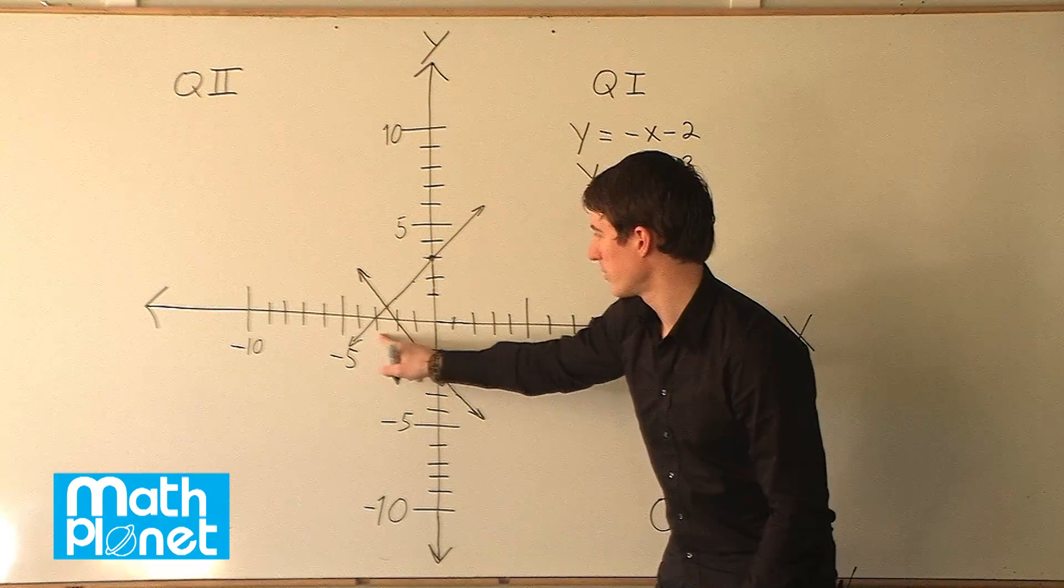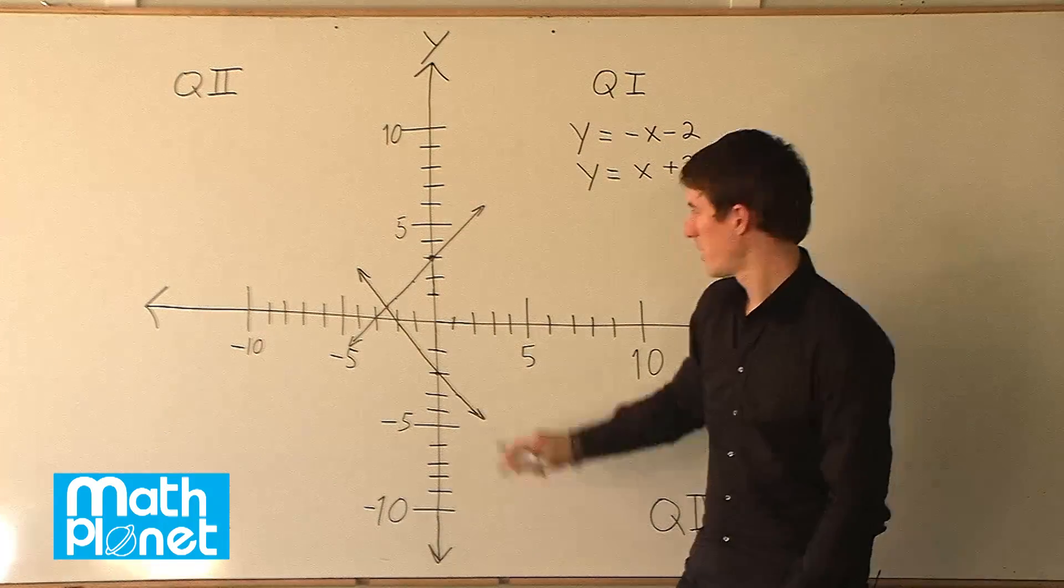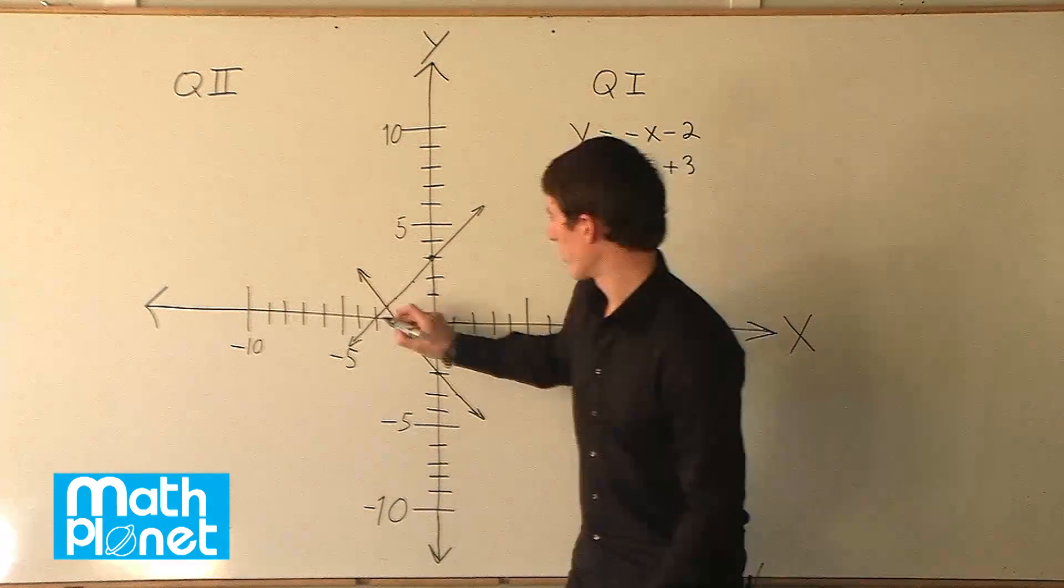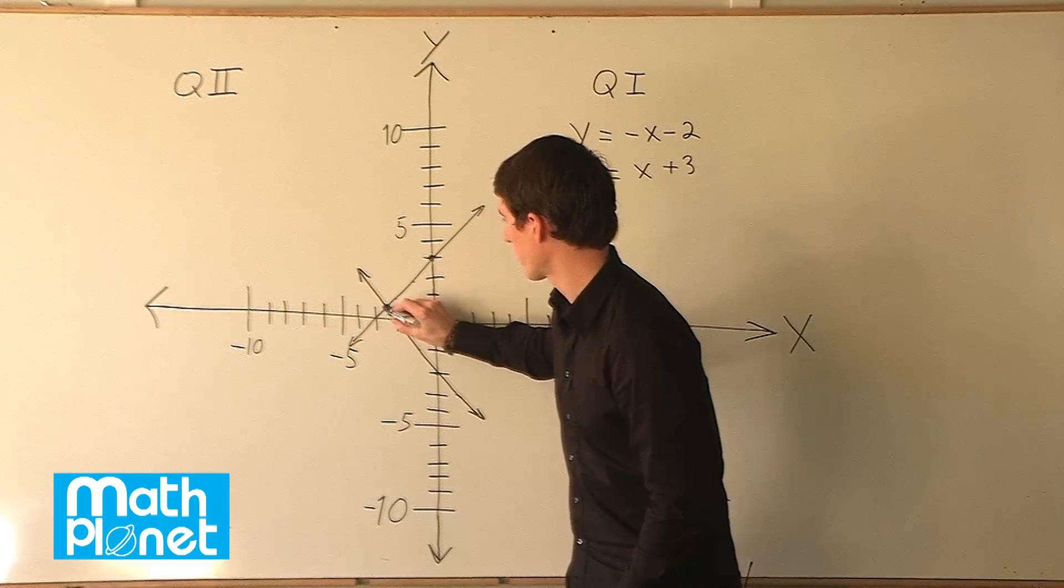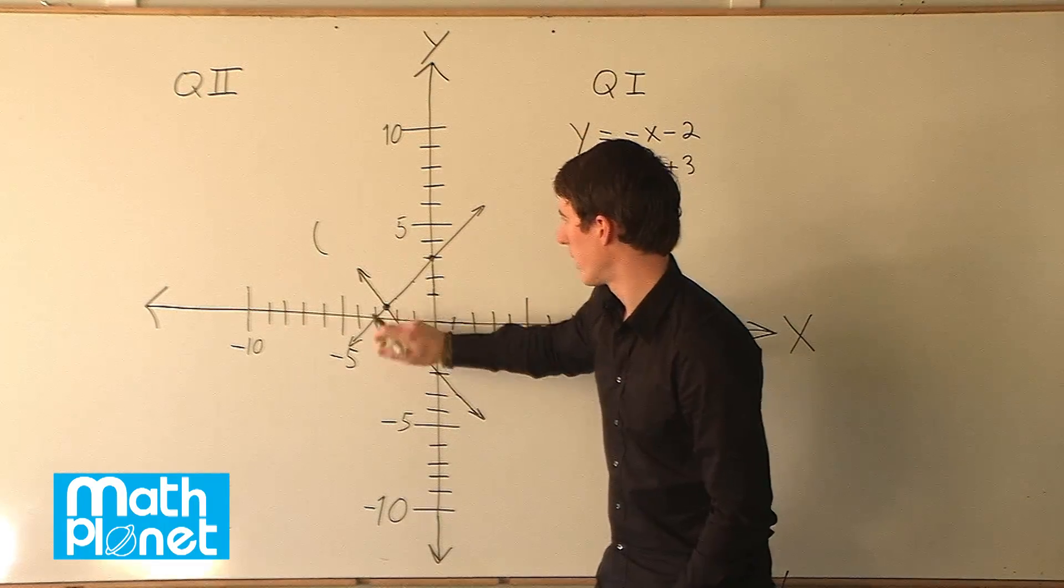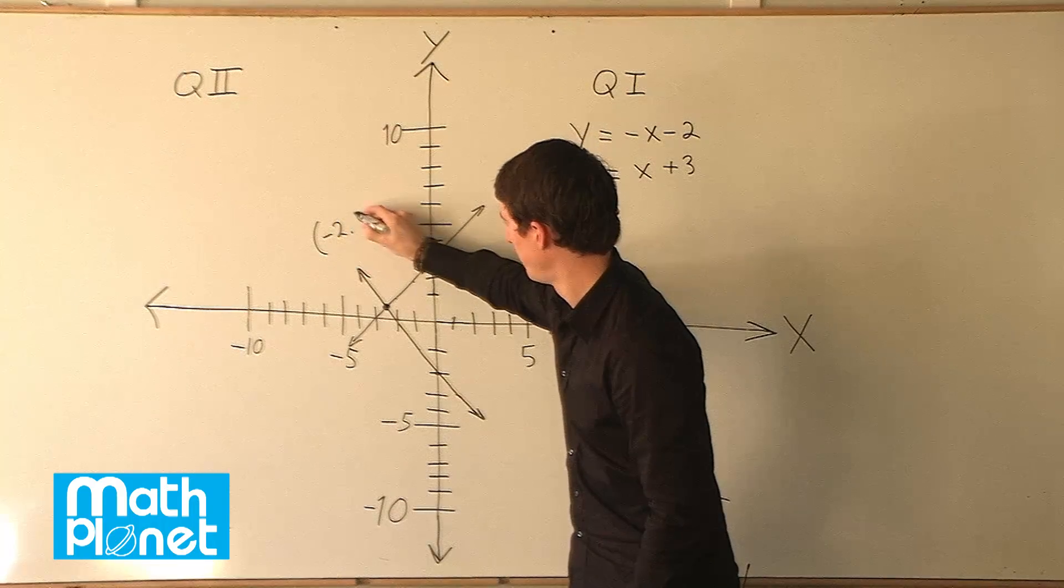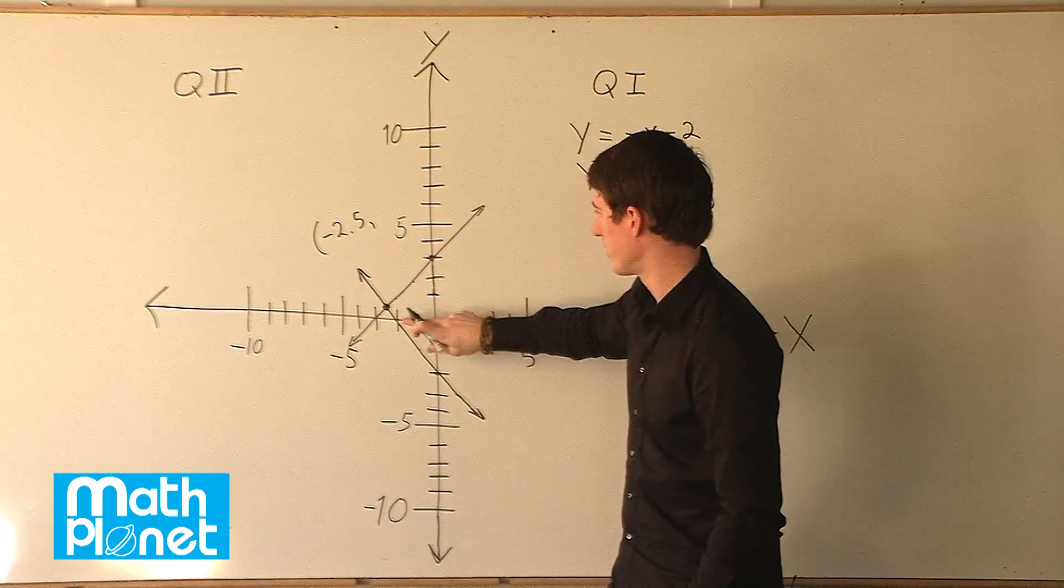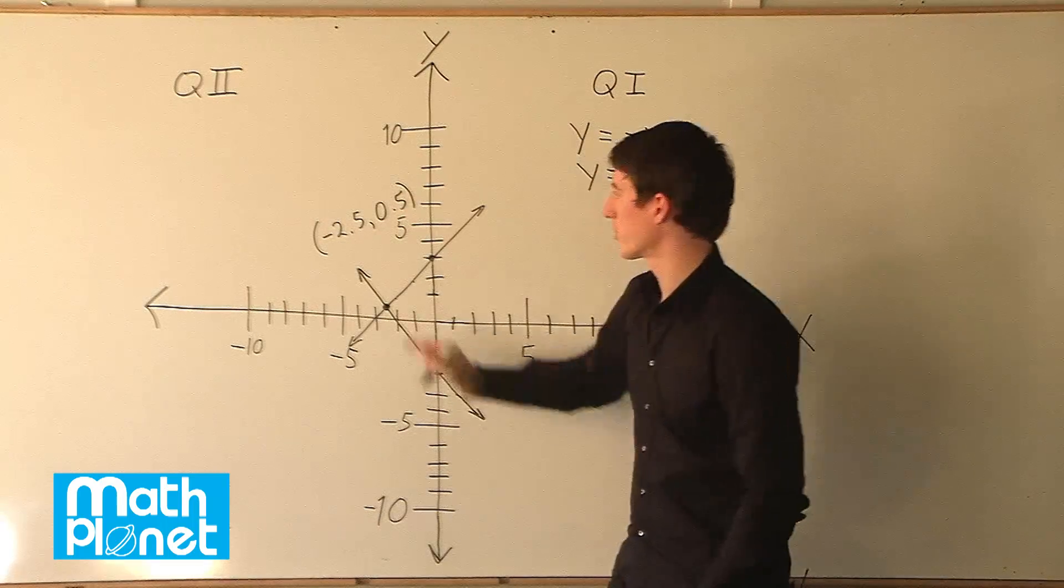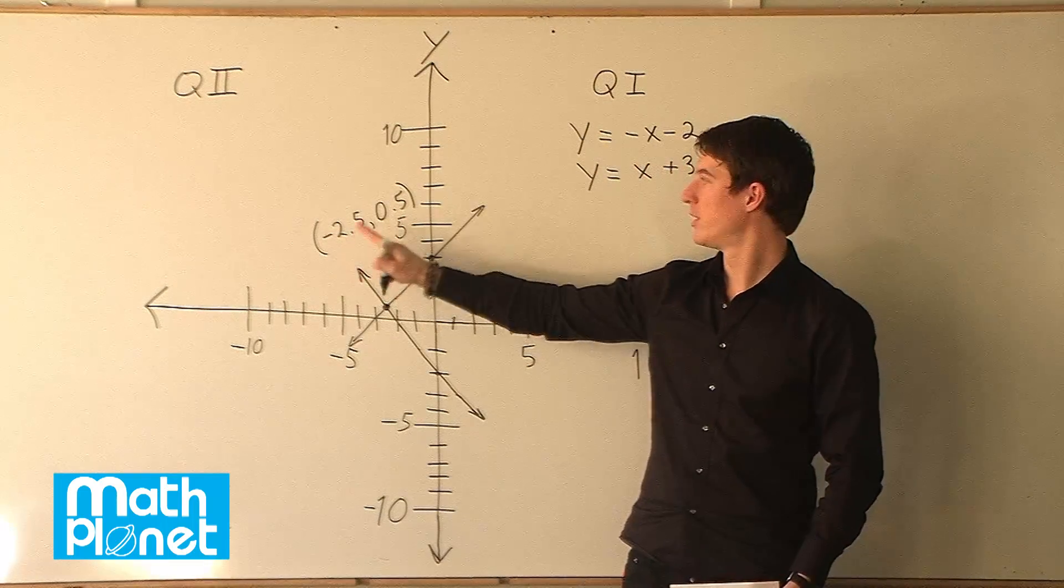But it's midway between these two points, negative two and negative three. And midway between these two points, zero and one. So our point is right here and that's our answer. And that looks to me to be negative two point five and y is zero point five. So that's our answer. x is equal to negative two point five and y is...